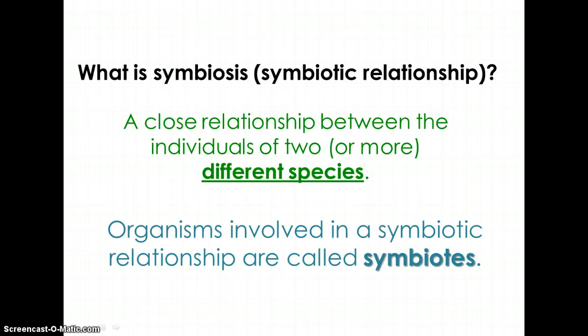The first thing we need to know is: what is symbiosis or a symbiotic relationship? This definition is also printed on your note sheet. Symbiosis is a close relationship between the individuals of two or more different species. While you may have a close relationship with your parents, that is not a symbiotic relationship because all humans are of the same species. Organisms involved in symbiotic relationships are called symbiotes.